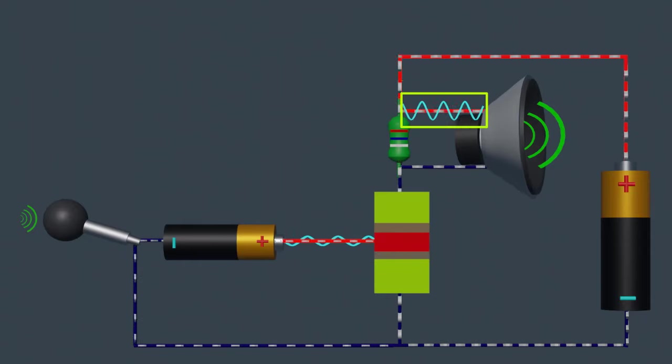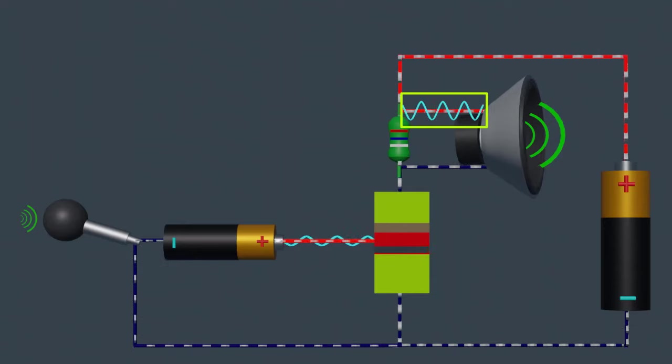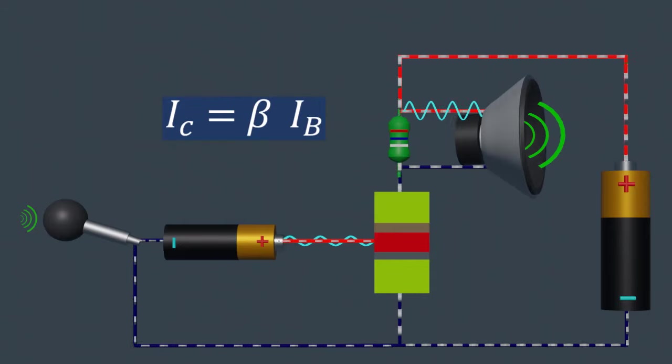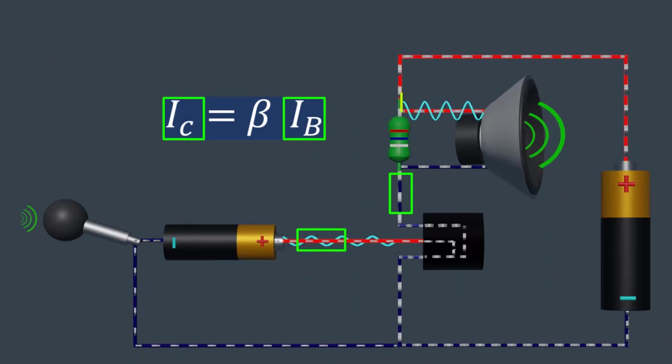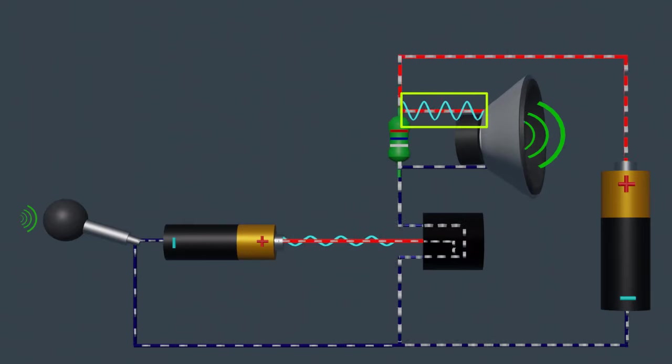The amplified output signal appears across the collector-emitter junction. This output signal is essentially a larger and amplified version of the input signal. By controlling the base current, we can control the collector current and thus amplify the input signal.